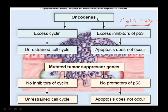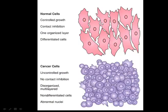When a proto-oncogene or a tumor suppressor gene is mutated, we call it an oncogene. So an oncogene is a mutated gene that deals with mitosis.